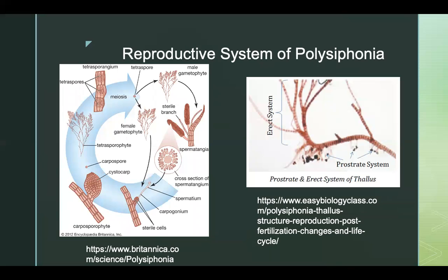The reproductive system of Polysiphonia: Polysiphonia is heterothallic, which means that it requires two individuals of opposite sexes to reproduce. It is also an oogamous form of reproduction, which means it consists of a mobile male gamete seeking an immobile female gamete.